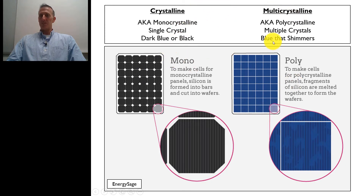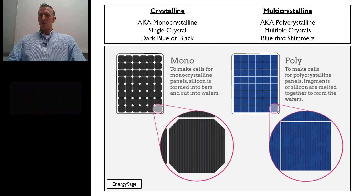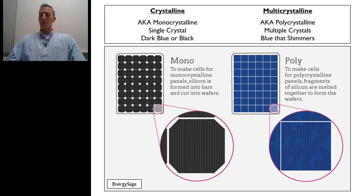These are some differences in what those modules are called, how they appear, and how they're produced. As you look at different modules, you can start to identify the differences between the two. Remember, Table 690.7a only allows you to use modules that are either crystalline or multicrystalline, and only when exposed to temperatures no lower than negative 40 degrees Celsius. If you're doing thin film or any other type of module, you cannot use Table 690.7a.